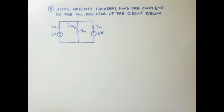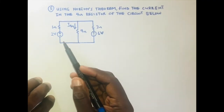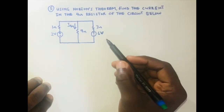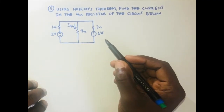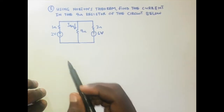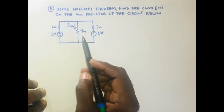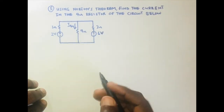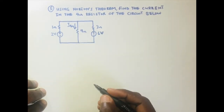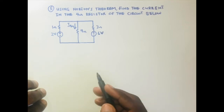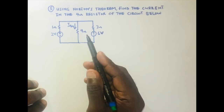In this circuit, we have two voltage sources: the 2 volts and the 6 volts. We also have three resistors — 1, 4, and 3 ohms — connected in the circuit. We are supposed to use Norton's theorem to find the current flowing through the 4 ohm resistor.